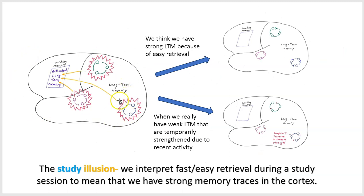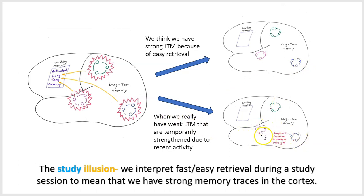Here is the study illusion: we are studying and processing information, forming cortical memory traces. A moment later we try to retrieve information and we're really successful. So we might think we have strong long-term memory traces because of that easy retrieval — we think our brain has strong traces just because we had easy access a moment after studying. But what might really be going on is that we still have weak cortical memory traces that are just temporarily strengthened due to the recent study session. The study illusion is interpreting fast easy retrieval during a study session to mean strong memory traces in the cortex — that might be false.